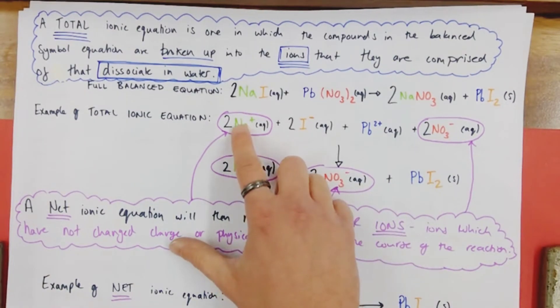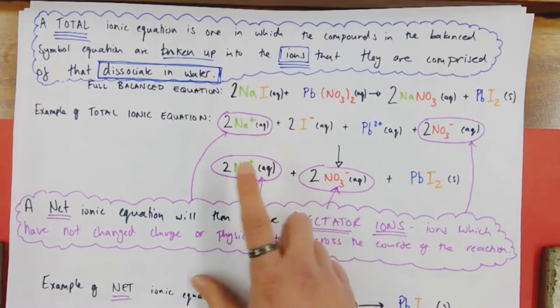So at the start of my reaction, I have two soluble sodium ions with a plus-one charge. At the end of my reaction, I have two soluble sodium ions with a plus-one charge. They haven't really got involved.